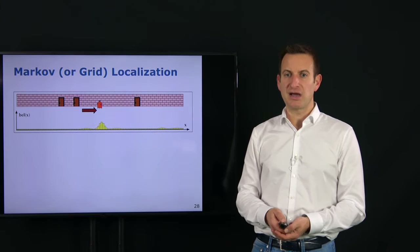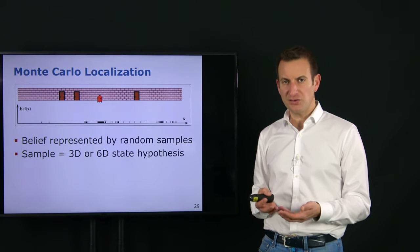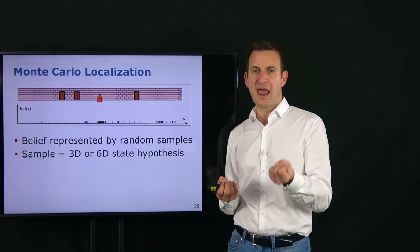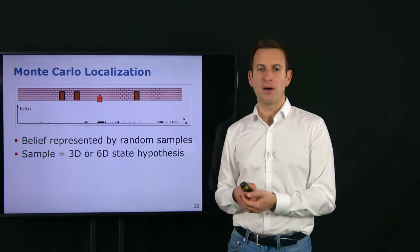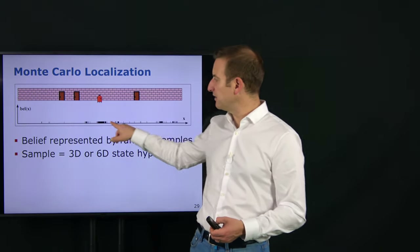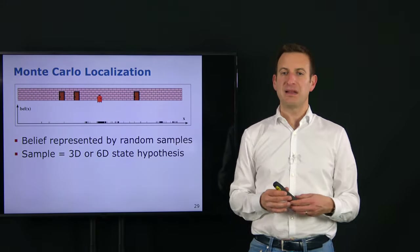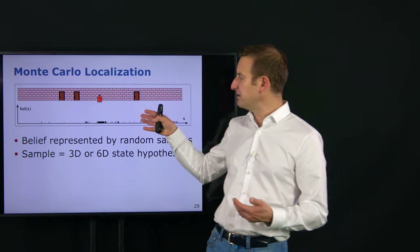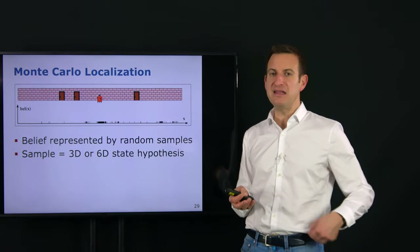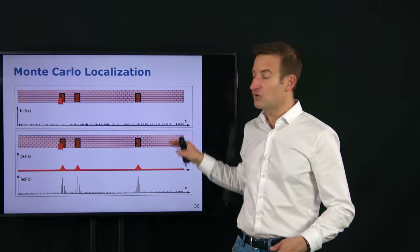Monte Carlo localization is an alternative where the belief is represented not by a histogram but by random samples — every sample is a state hypothesis, a guess of where the system is in X, Y, theta or X, Y, Z, pitch, yaw, roll. These black lines represent the position configuration of samples in the environment. The key idea is that instead of a fixed discretization, we use random samples to represent the belief about where the platform is. If we have no idea where the platform is, we uniformly initialize samples across the environment.